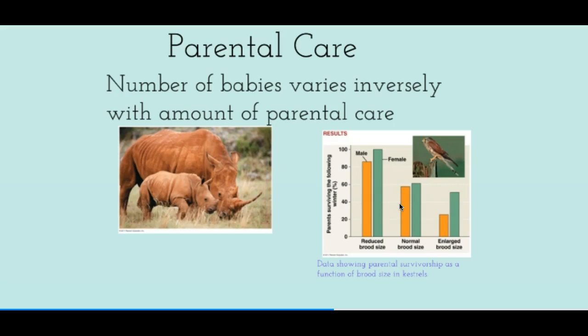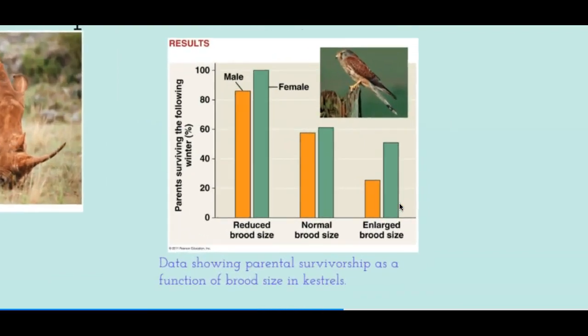The number of babies varies inversely with the amount of parental care. If an organism produces many offspring, that costs a lot of energy, leaving less energy for parental care. If an organism produces only one or a few offspring, it can invest more energy into parental care. This trade-off exists because there is not an unlimited amount of resources — only a certain amount of energy is available for parents and offspring combined.